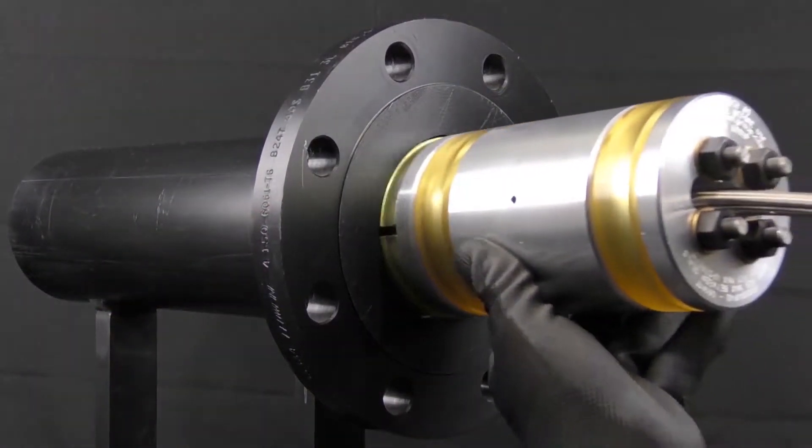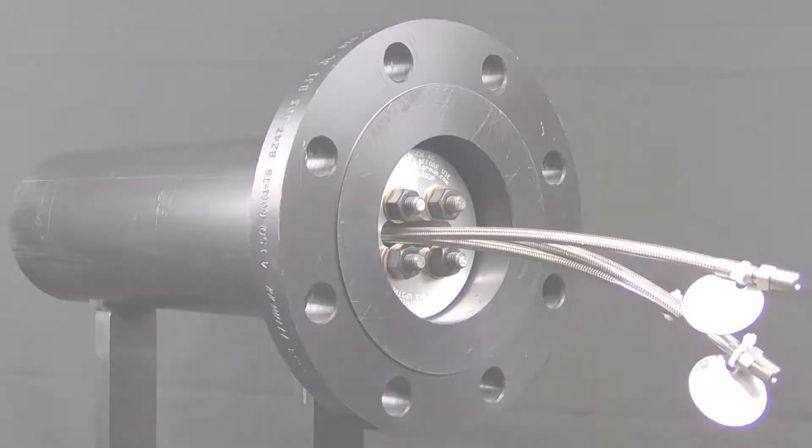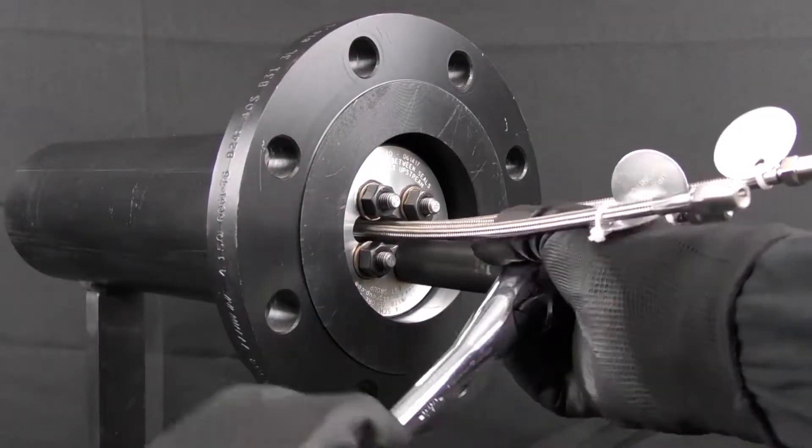To pressure test the weld connection, place the GripTight isolation plug inside the pipe and position the plug so the seal straddles the weld area you are testing.